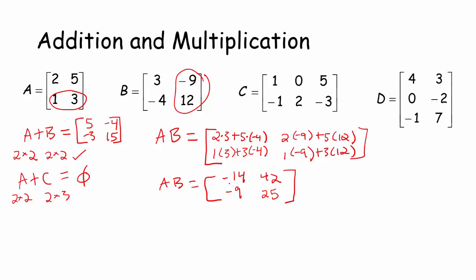Hopefully no arithmetic mistakes there — that is A times B. A key rule to keep yourself organized: for multiplication to be defined, the number of columns in the first matrix has to be the same as the number of rows in the second matrix. Let's do an example with non-square matrices.